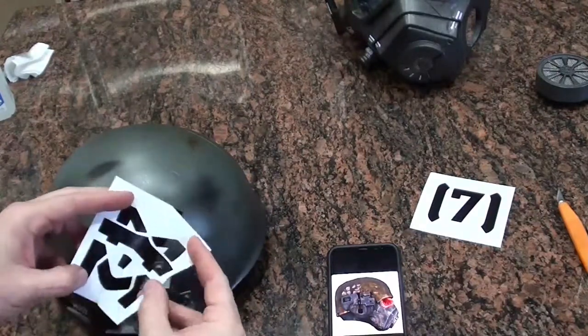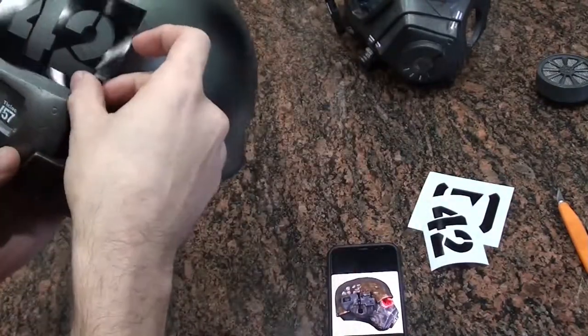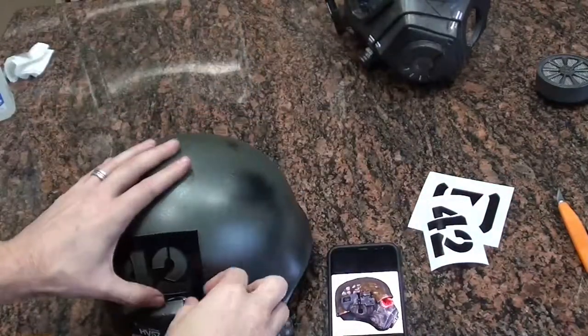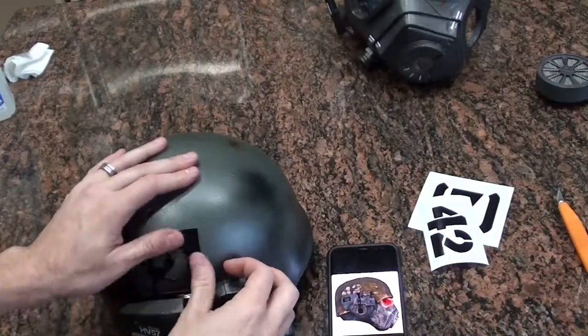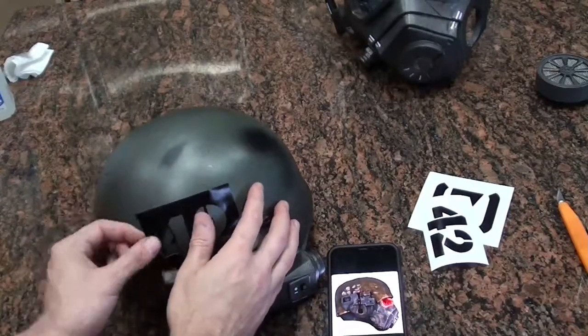Now this is a smaller mask so it fits a little bit better. Although we're still going to apply a little bit of heat just to shrink it down and rub out any of the wrinkles. But there's not as many on this side. It's a little easier to work with.